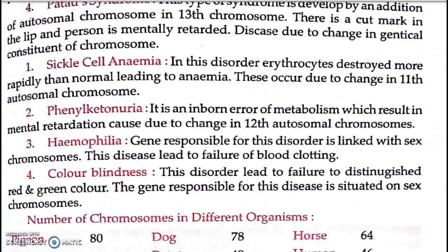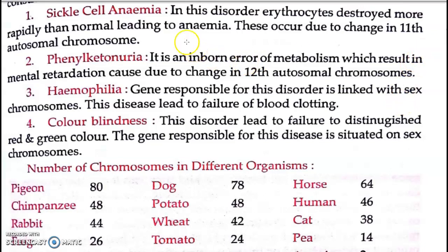Now we will start with sickle cell anemia. In this disorder, erythrocytes are destroyed more rapidly than normal, leading to anemia. This occurs due to a change in the 11th autosomal chromosome. Sickle cell anemia is related to a blood disorder — a deficiency in the blood. The RBCs, or erythrocytes, take on a sickle form — like a crescent-shaped tool.